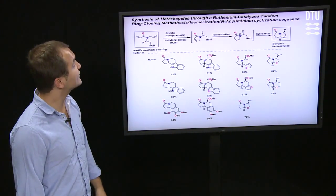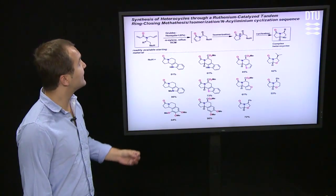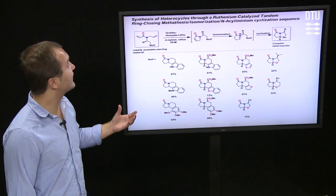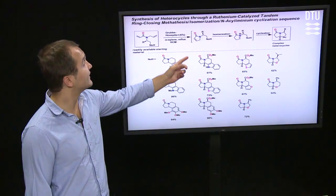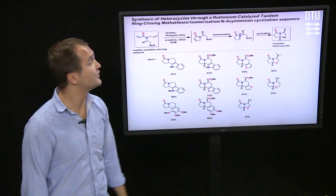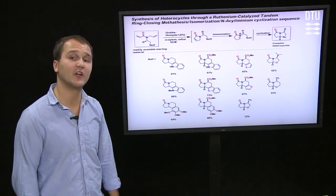Applying heat during this reaction, the ruthenium catalyst is being changed to another catalytic species where it isomerizes this double bond to this intermediate here, which is a highly reactive iminium ion intermediate.